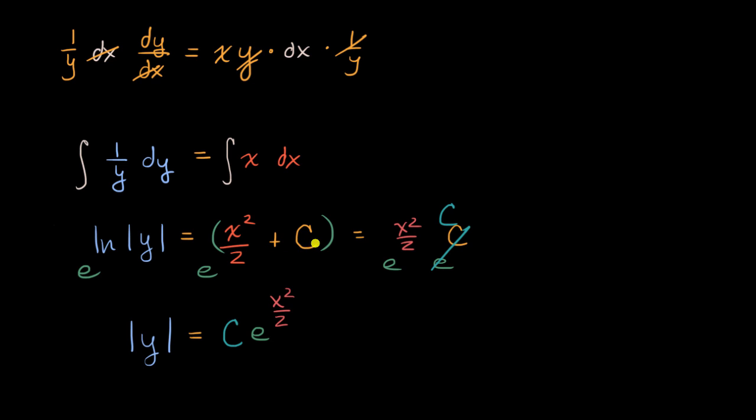Hopefully you see what I'm doing there, I just use my exponent properties. e to the sum of two things is equal to e to the first thing times e to the second thing. And I just said, well, e to the power of some constant c, we could just relabel that as, let's call that our blue c. And so this simplifies to blue c times e to the x squared over two. Now, we still have this absolute value sign here.